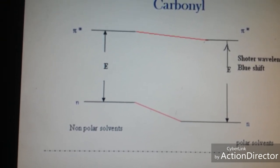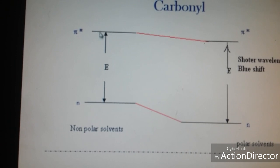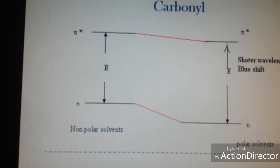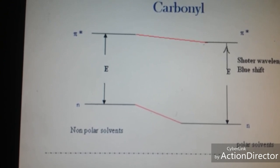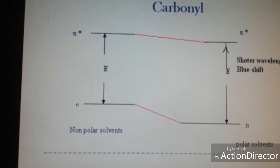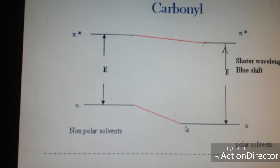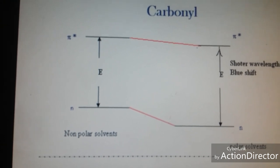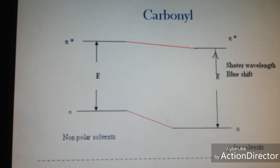First is the effect of solvent on n to pi star transition. Consider the energy gap for n to pi star transition — when we dissolve a carbonyl group compound in a polar solvent, the carbonyl group has non-bonded electrons and will form hydrogen bonding with the polar solvent. As a result, that energy level will stabilize and come lower in energy, increasing the energy gap. When the energy gap increases, the lambda value will be less, so the shift will be towards shorter wavelength — that is the blue shift.